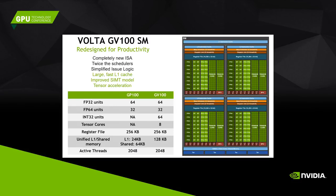We introduced tensor cores — 8 per SM — which were not available in Pascal. The register file size remains the same. We changed the L1 and shared memory architecture, which I'll cover next. The number of active threads is the same as with Pascal.